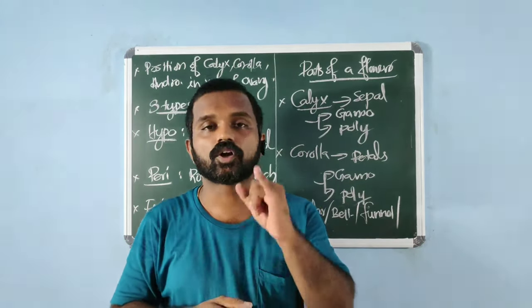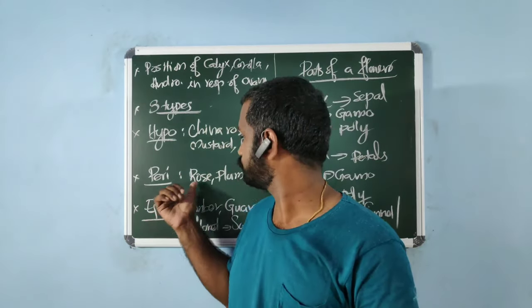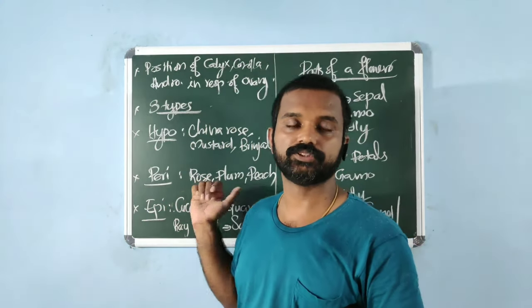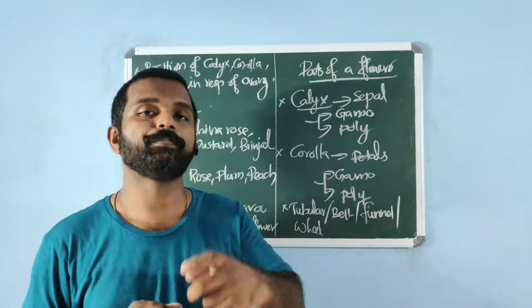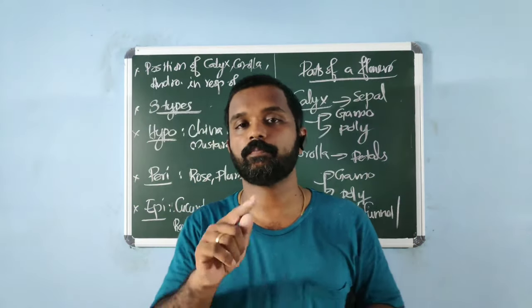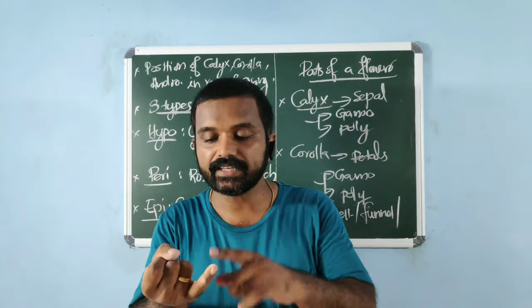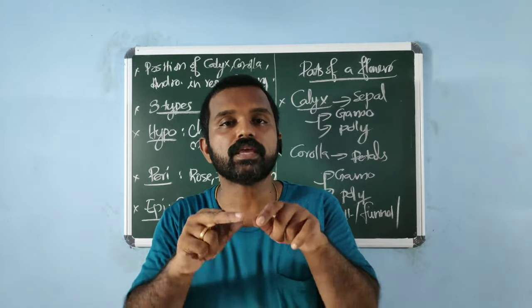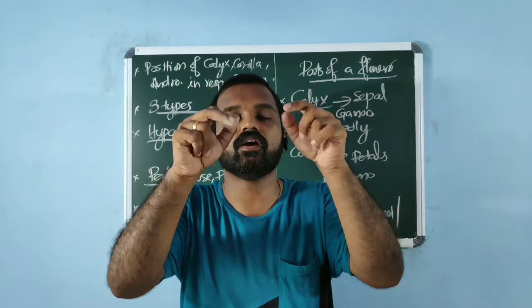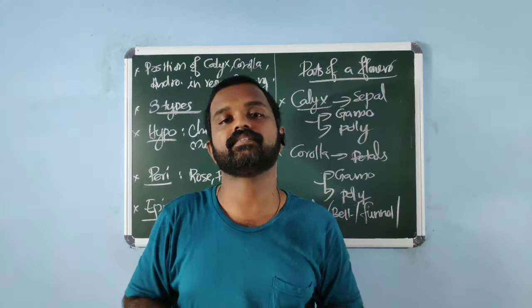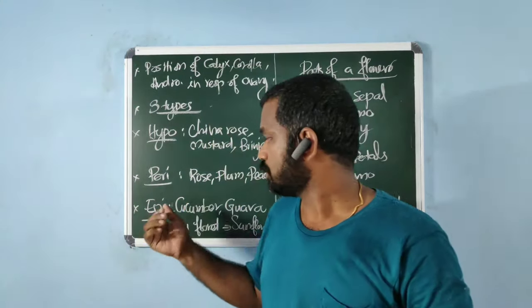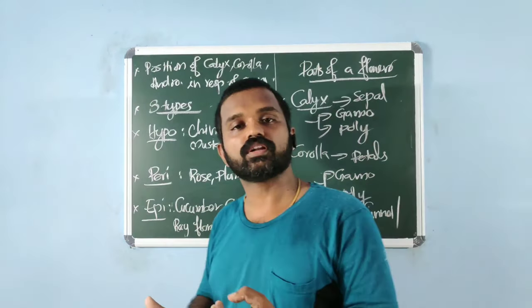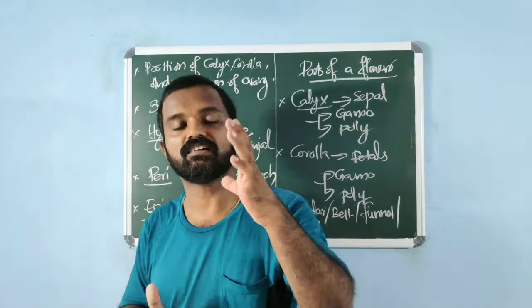Epigynous: epi means above. Calyx, corolla, and androecium arise from above the ovary — the ovary is inferior. Examples: cucumber, gourd, ray florets of sunflower.